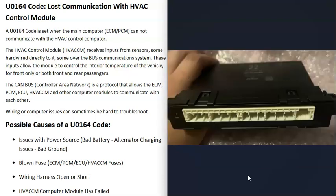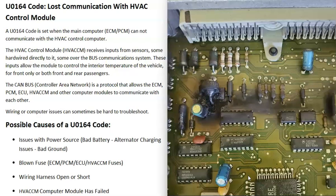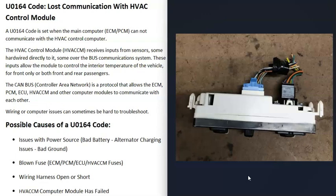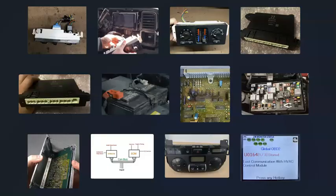The last possible cause is that the HVAC control module itself has failed and needs to be replaced. These modules are usually located behind the dashboard in hard-to-reach spots. If you've checked everything else — good power supply, no blown fuses, good wiring — then it's possible the computer has gone bad. Sometimes when these modules fail, there are burnt components on the board. If you can smell something burnt near the module, that's a sign it has failed. You can sometimes open it up and inspect it — burnt components confirm failure. But they can also fail with no visible damage.